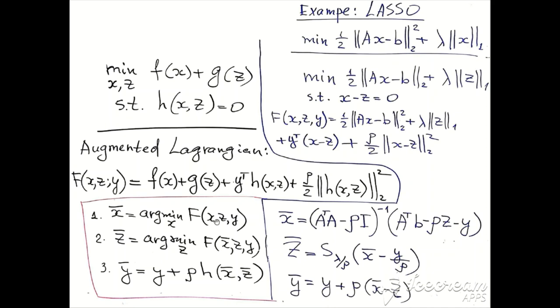The ADMM iteration will look as follows. We first minimize our augmented Lagrangian in X. To do so, we think about Z as a constant. We write down the gradient in X. In X we have only quadratic terms, so we take the gradient in X of this expression and equate it to zero. It's easy to see that this will be the solution of our problem.